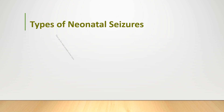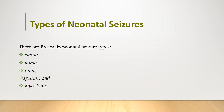When we look at the types of neonatal seizures, there are around 5 main types. Those include subtle, clonic, tonic, spasm, and myoclonic. The most common type is the subtle type of seizure, also known as the aparet type. The poorest prognosis is associated with the myoclonic type.